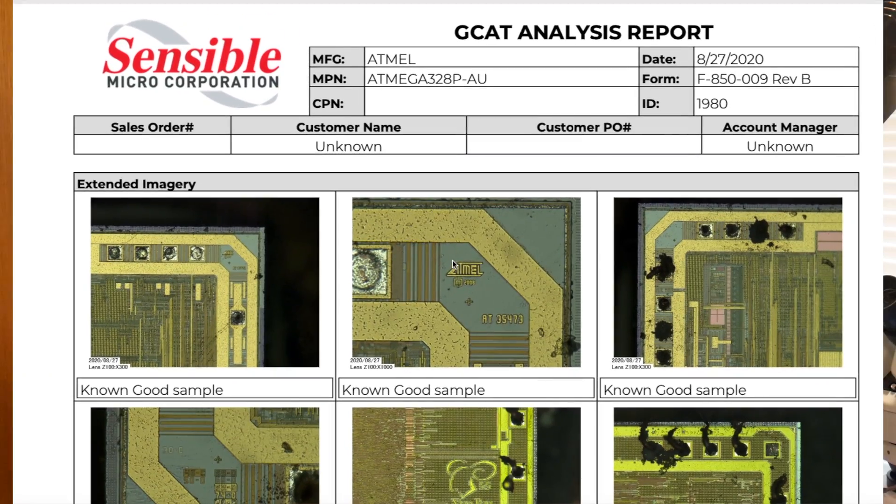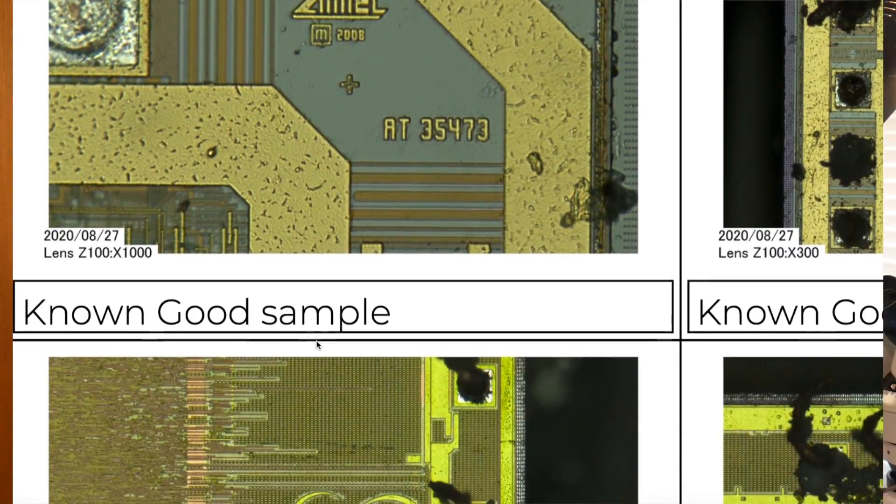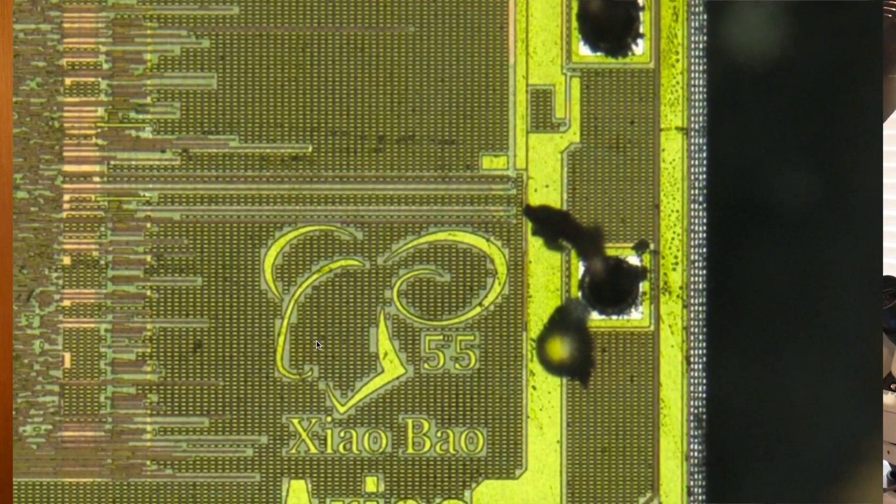In my first video, I compared the part on this board to some genuine parts I had and showed that they can't hit the same performance specs. And then in my last video, I sent the part off to Sensible Micro where they professionally did a forensic analysis on the part and showed that it is likely counterfeit. The die just does not match a genuine part.